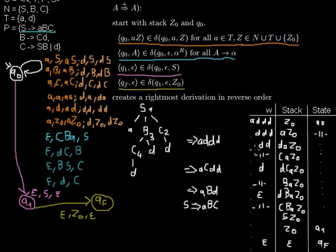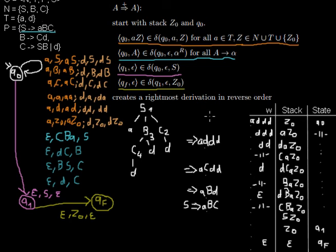You can also see where we reduce D to a C in the automaton — that corresponds to where we exchanged C by D in the derivation, just the other way around. So the automaton indeed works like a rightmost derivation in reverse order, and I hope that made it a little more clear for you.